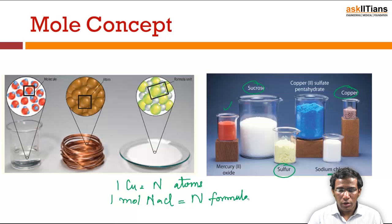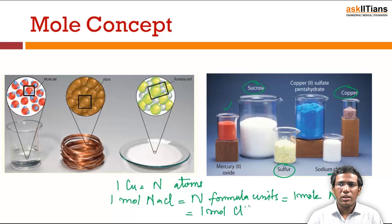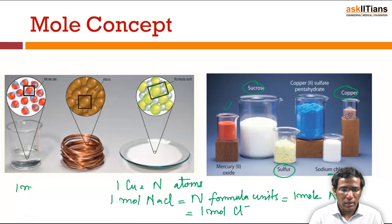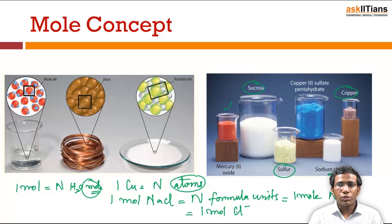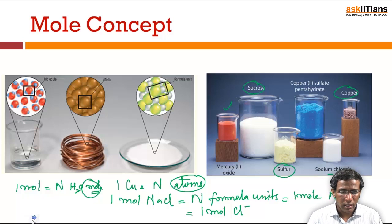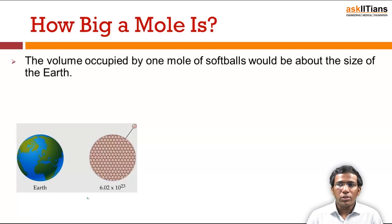One mole of NaCl contains Avogadro's number of NaCl formula units, which equals one mole of sodium ions and one mole of chloride ions. One mole of water contains Avogadro's number of H₂O molecules. So observe the difference: it may be atoms, molecules, formula units, or ions — but one mole of any compound contains Avogadro's number of particles.